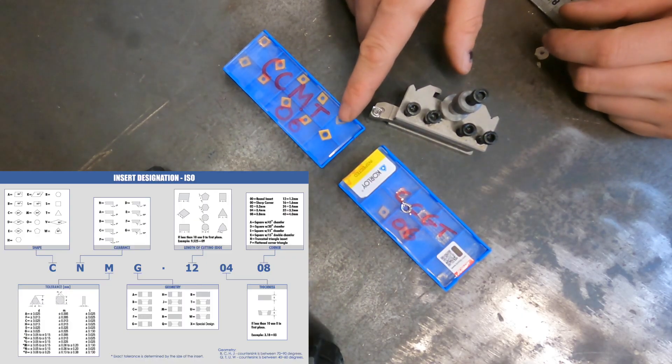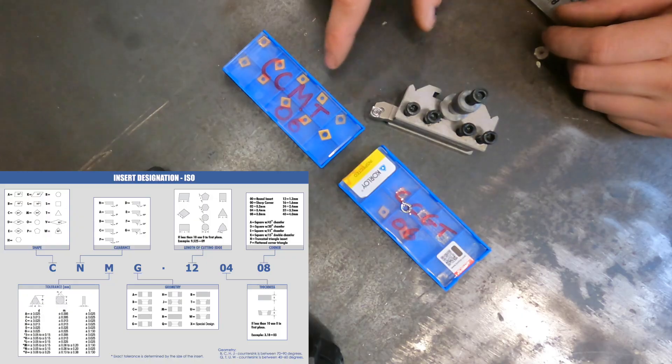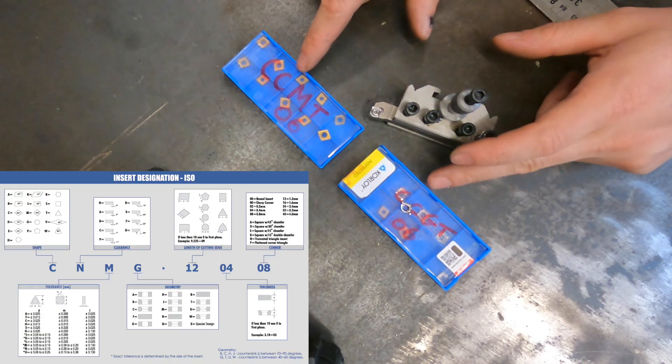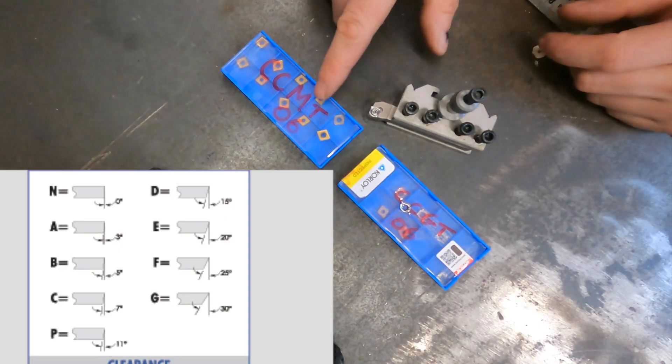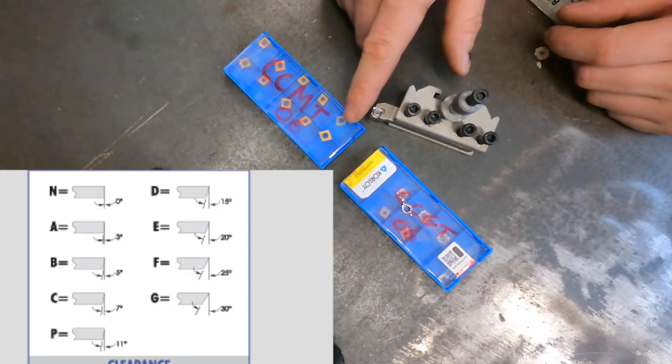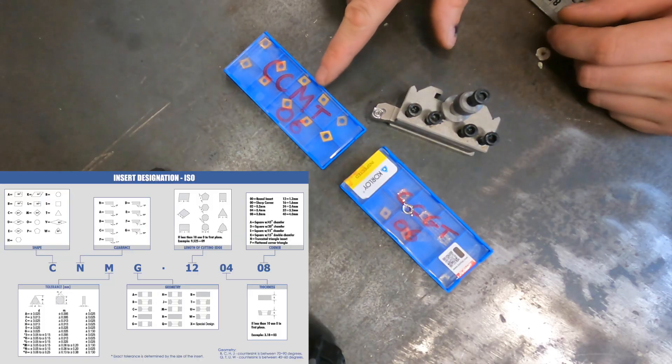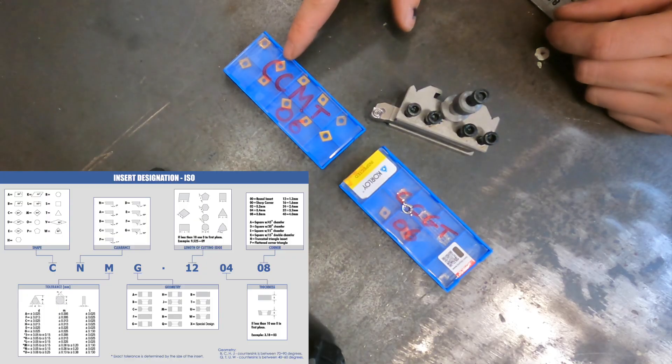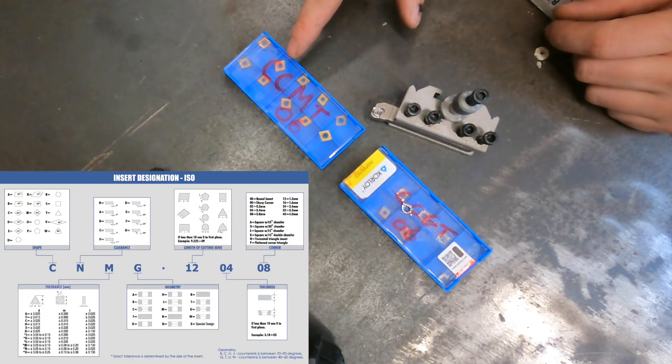Moving across, let's talk about the next C. The C on this chart dictates that this actually has a seven degree positive rake angle. So far both these share two traits: they both are a diamond shape with an 80 degree cutting angle and they both have a seven degree positive rake angle on them.